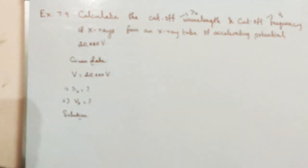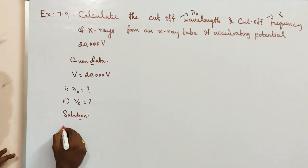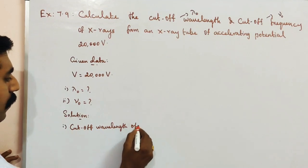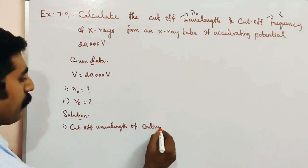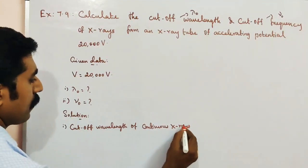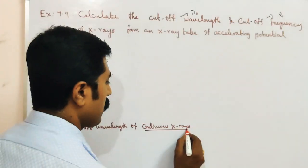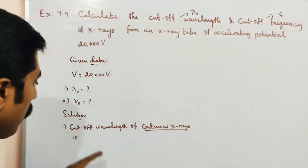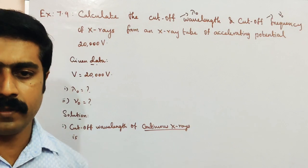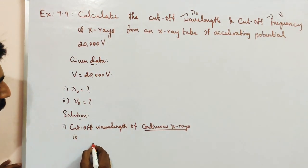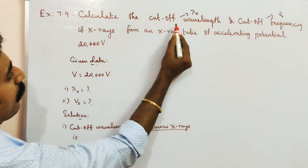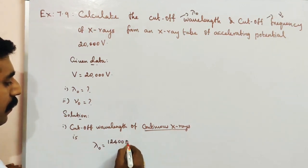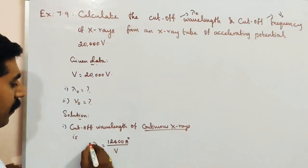Solution — Part 1: Cutoff wavelength. The cutoff wavelength of continuous X-rays — note the textbook says characteristic X-rays, but the correct term here is continuous X-rays spectrum. The formula for cutoff or threshold wavelength is: λ₀ = 12,400 Ångströms divided by V.